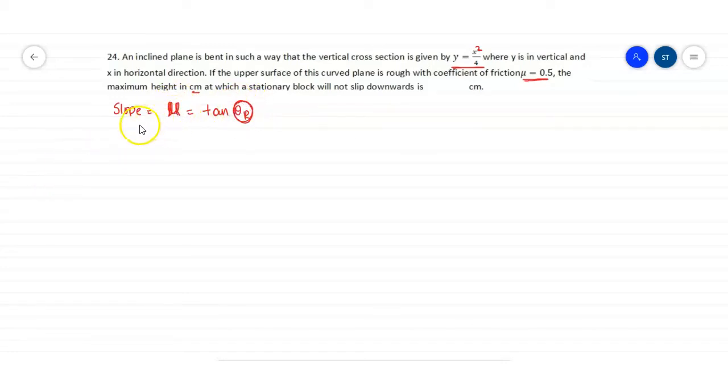The slope of the curve has to be mu at the maximum height. We can say y equals x squared by 4. Differentiating this we can write dy by dx, which is slope, equals 2x upon 4, so this will be x by 2. Slope at any point is x by 2.